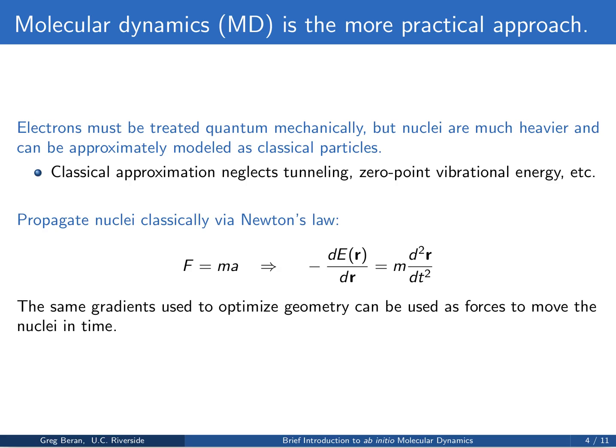In molecular dynamics, because we're treating the nuclei classically, we're going to propagate them via Newton's law: F equals ma, or the derivative of the energy with respect to the nuclear positions equals mass times acceleration, which is the second derivative of the position with respect to time. The same gradients of the energy that we use when optimizing geometries in our quantum chemistry calculations can also be used as the forces that move the nuclei in time.